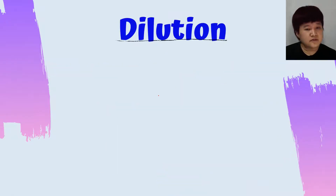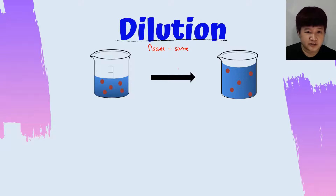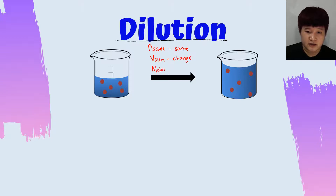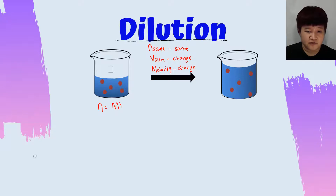After we understand the concept of dilution, let's look into the calculation. In the process of dilution we know that the number of moles of solute will remain the same, but what changes is the volume of solution. There is one more thing that changes — the molarity of the solution. The concentration definitely changes because the volume of the solution increases. We know that the number of moles formula is n = MV over 1000.